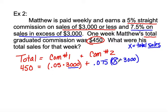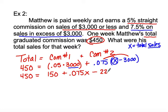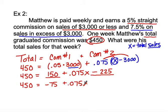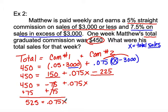So I'm going to go ahead and simplify this equation. I have 450 equals 150 — after I multiply — plus then we distribute that 0.075, which is 7.5%, minus 225 when I multiply that out. Collecting like terms of 150 and negative 225 gives me 450 equals negative 75 plus 0.075x. Then we solve: add 75 to both sides, that gives me 525 equals 0.075x. Divide both sides by 0.075, and that gives me total sales of $7,000.